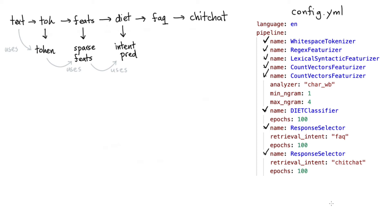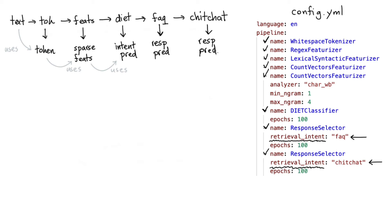These are both response selector models, and you'll notice that they have a retrieval intent, meaning that the first one focuses only on frequently asked questions and the second focuses on chit chat intents. Both of these models, independently of each other, will come up with a response prediction. One thing worth pointing out is that the features both of these response selectors use are exactly the same features that the DIET architecture uses.